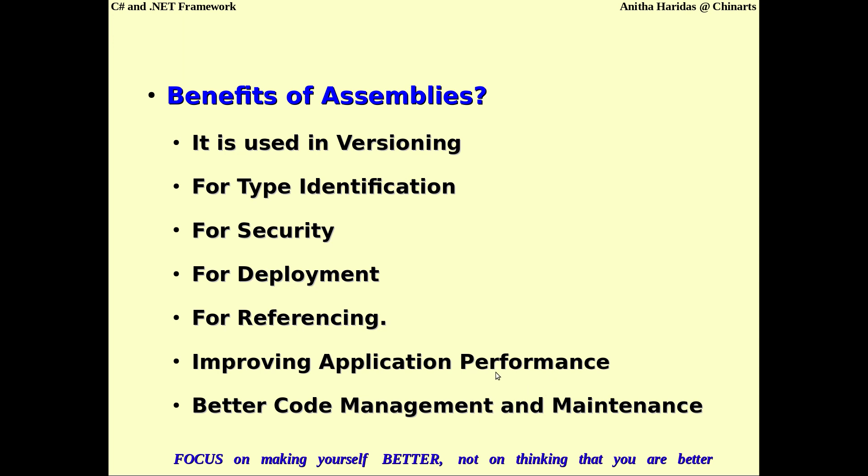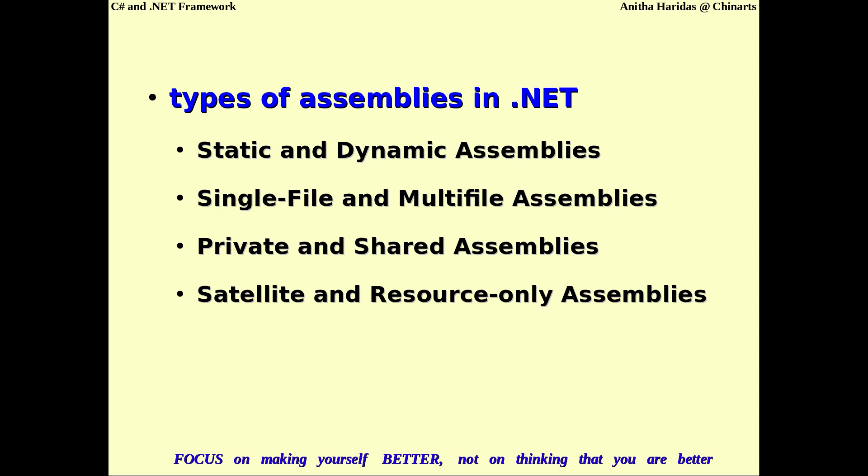For code management and maintenance, we can also make use of assemblies. So these are the different benefits of assemblies: versioning, identifying different data types, security permissions, deployment, code management, and improving application performance. In the .NET environment, you can have static or dynamic assemblies, single file or multi-file assemblies, private or shared assemblies, or satellite and resource-only assemblies.